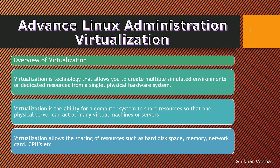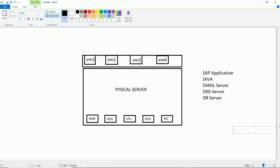Let me explain the whole concept of virtualization with an example using a PPT figure. Here you can see I have one physical server — it could be from any hardware vendor: Solaris, Sun, HP, or Dell. In this big physical server we have enough RAM, enough hard disk, 16-core CPUs, multiple NIC cards, and something like 128 GB of RAM.